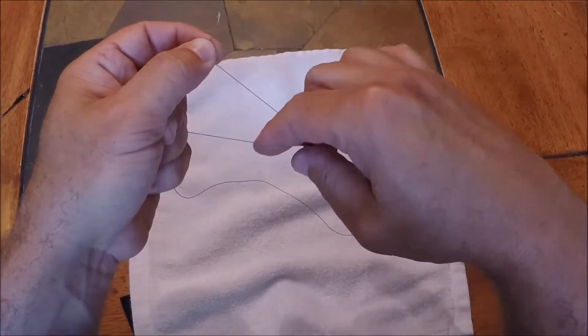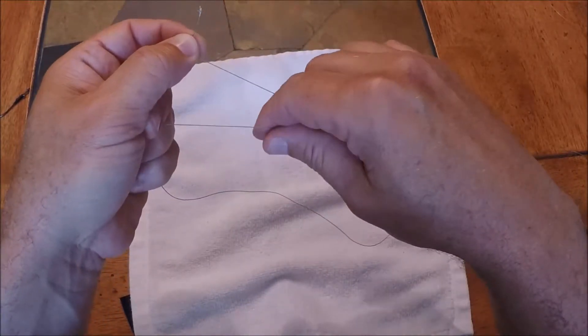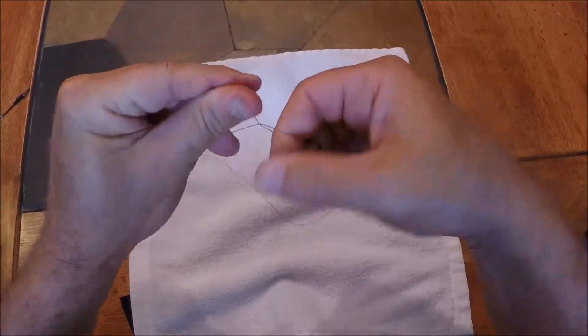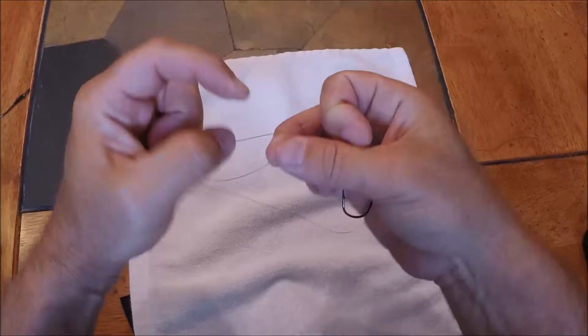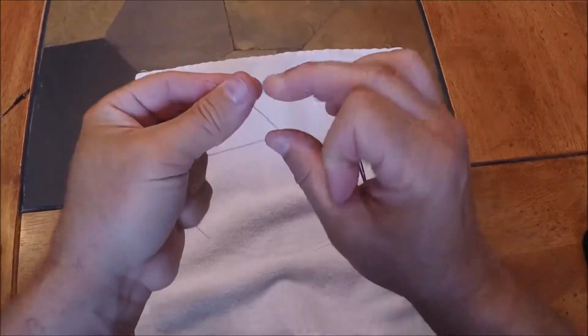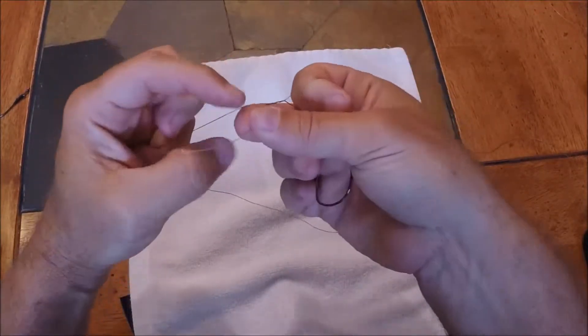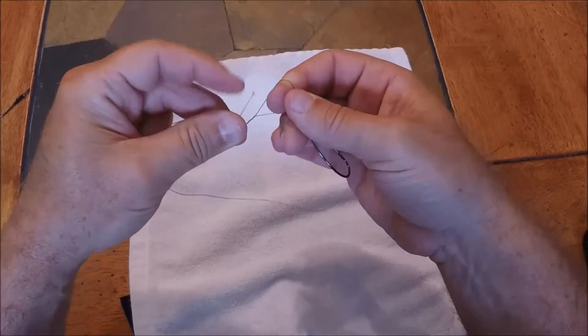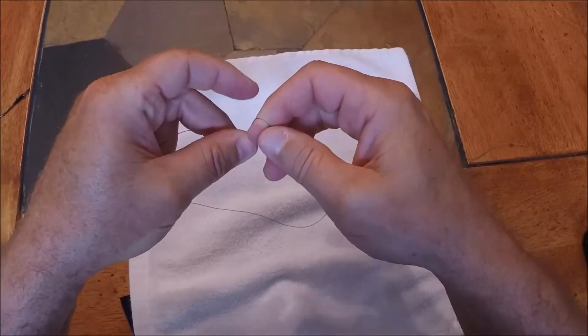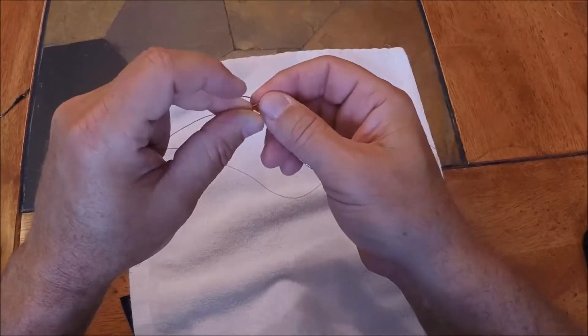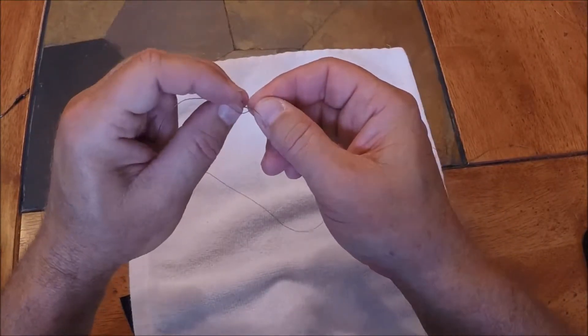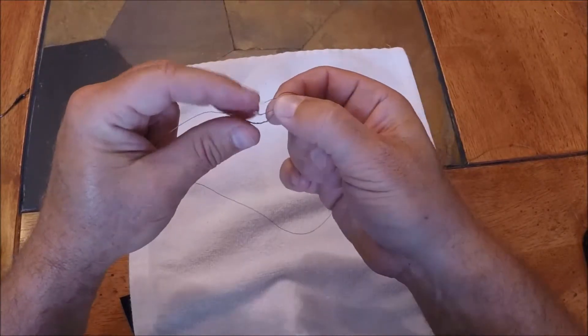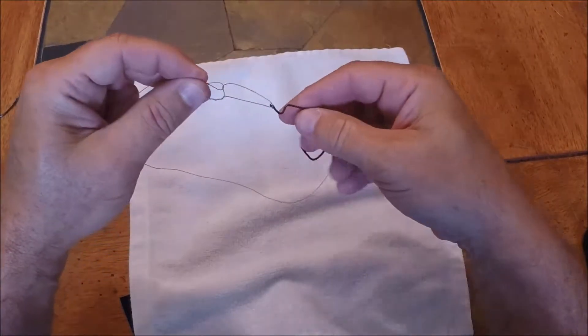What I like to do is put my finger right here. That way it creates that loop and I'm not going to lose the loop. I'm going to twist five to seven times: one, two, three, four, five. Now I'm going to take this tag end and go back through where my finger is. Now I've just created a brand new loop right here. I'm going to go back through that loop and that completes the improved clinch knot.